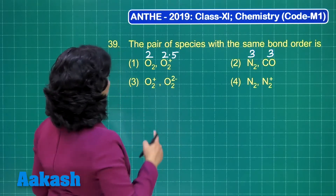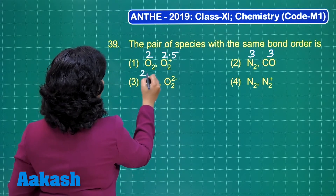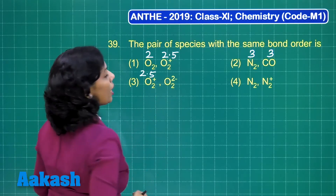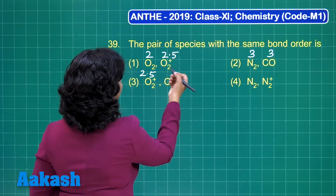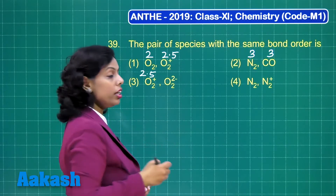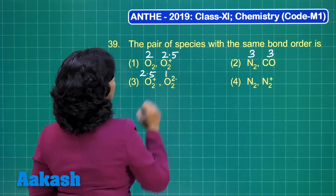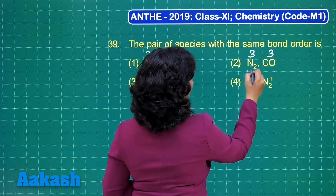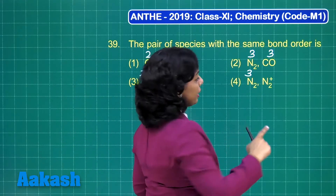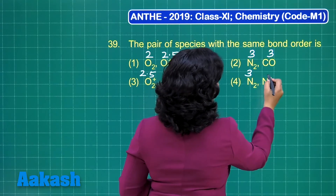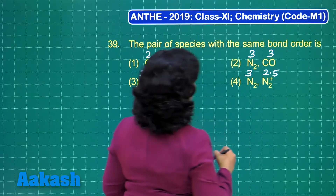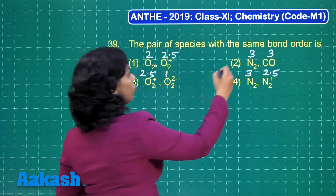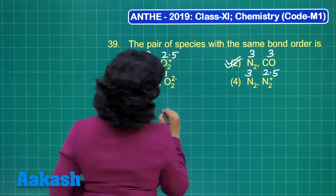Let us check the bond order of other species also. O₂⁺ is 2.5 as we already know. What about O₂²⁻? In case of O₂²⁻ there are more anti-bonding electrons and that is why the bond order becomes 1. For N₂⁺ the bond order is 2.5. So the correct answer is option 2 (N₂ and CO).